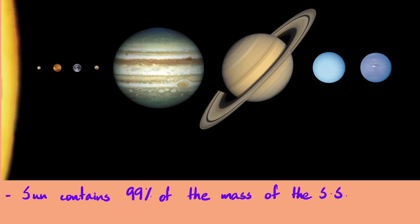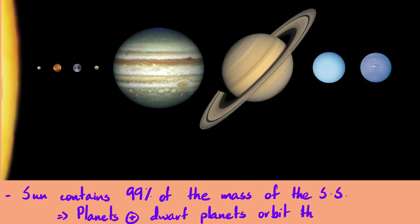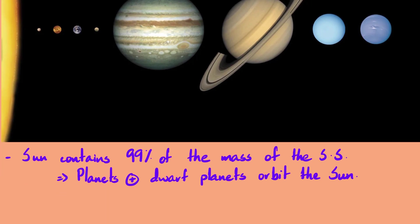So almost everything in the solar system orbits the sun — the planets, the dwarf planets, and to some extent the asteroids and comets as well. Some things don't, for example our Moon does not orbit the sun, because at that distance the sun's gravity becomes a little weak. But most other things do revolve around the sun.